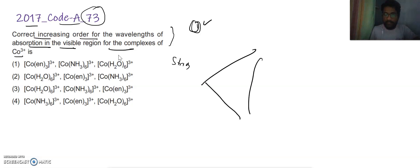When the splitting will be more, the energy difference between the T2G and EG will be high. High means Hc by lambda. Lambda will be low.